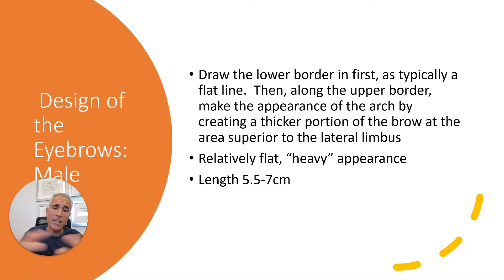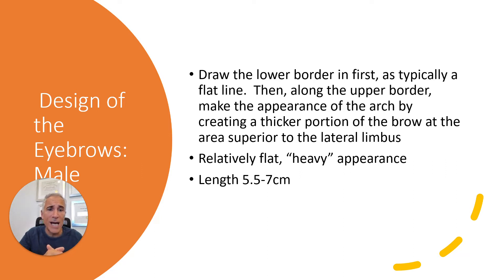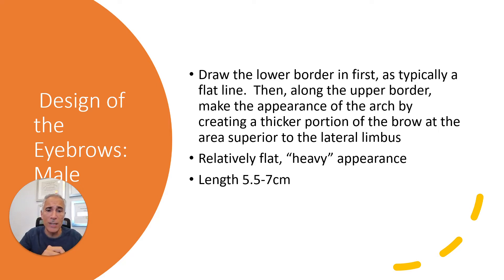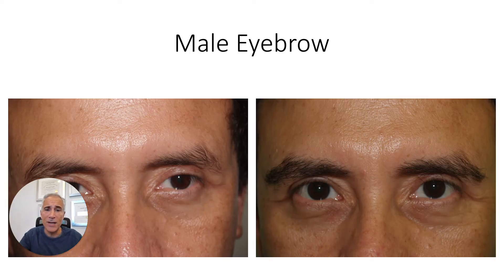The first step is the design of the eyebrows. What I usually do is draw the lower border first — it's typically a flat line. Then along the upper border, I make the appearance of the arch by creating a thicker portion of the brow at the area approximately superior to the lateral limbus. The length is usually 5.5 to 7 centimeters.